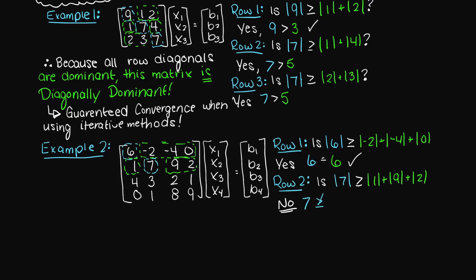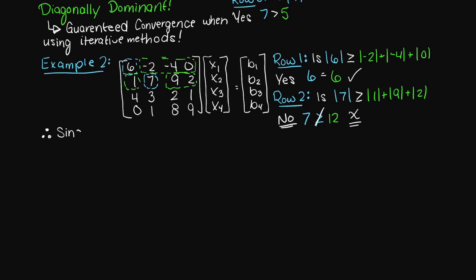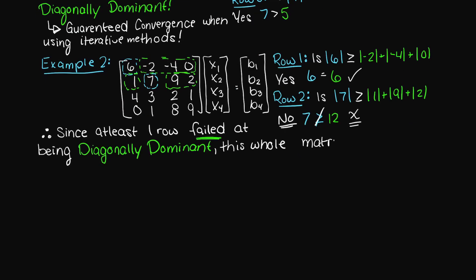Now we have run into a bit of a problem. In this row the diagonal element is clearly less than the sum of the other components. Therefore since one of our rows failed the diagonal dominance test, then we know that this matrix is not diagonally dominant.